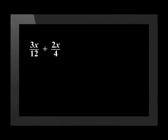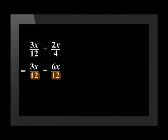To change 12 to 12 we just multiply by 1. The second term has a denominator of 4; to change this to 12 we multiply by 3, which means we also multiply the numerator by 3, giving us 6x over 12. Now that the denominators are the same, we can add, and our answer is 9x over 12.